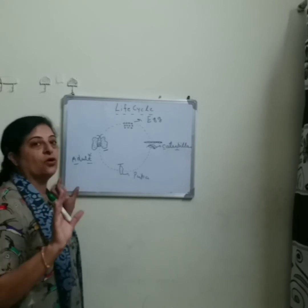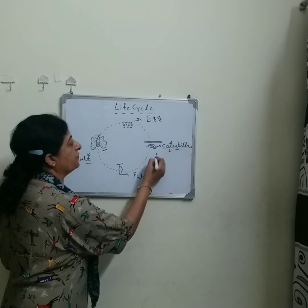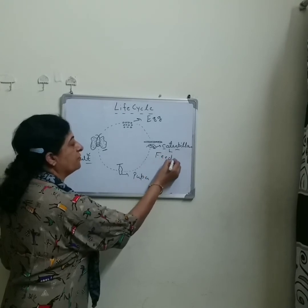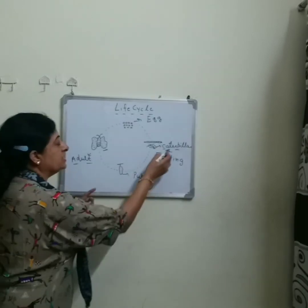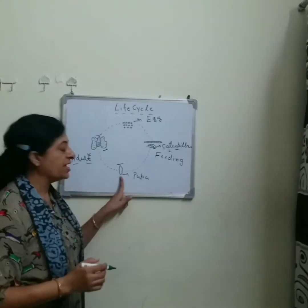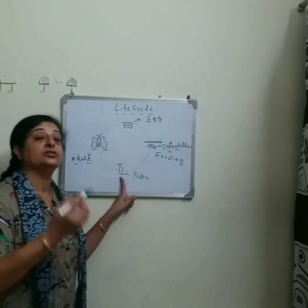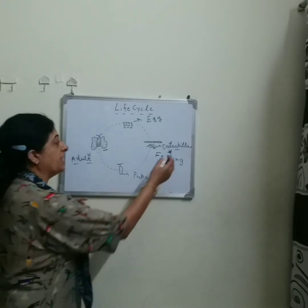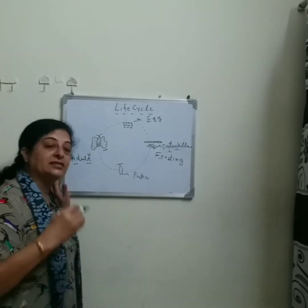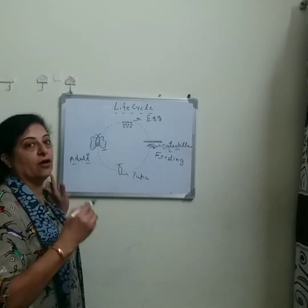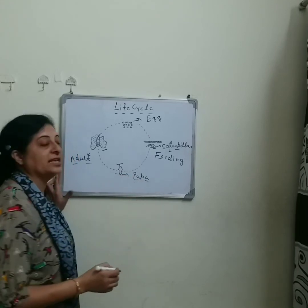When they have grown up properly, they stop feeding — they stop eating. This caterpillar will then make a protective shell all around it. At this stage, when the caterpillar stops feeding and makes a protective shell around it, this stage of the life cycle is known as pupa.